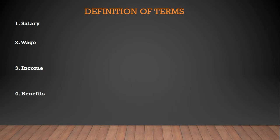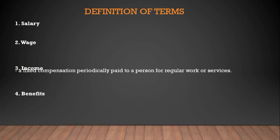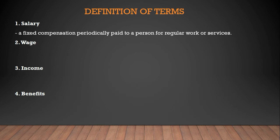Number one: Salary. Salary is a fixed compensation periodically paid to a person for regular work or services. Salary is a fixed income — for example, if you are hired by a company and offered 20,000 salary in one month, that is usually fixed and will not increase unless you get promoted. In salary, there is no overtime pay, no double pay, and no holiday pay.